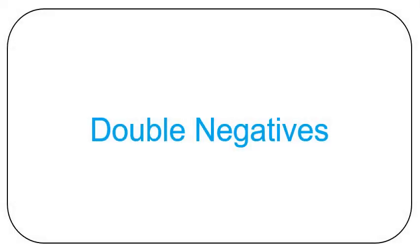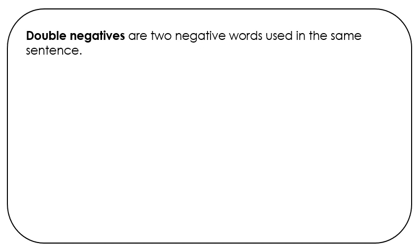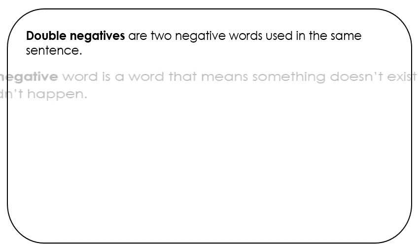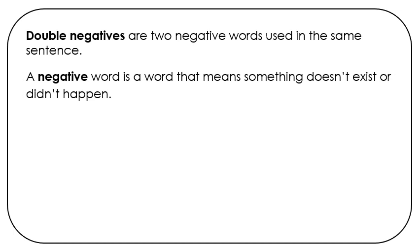Double negatives. Double negatives are two negative words used in the same sentence. A negative word is a word that means something doesn't exist or didn't happen.